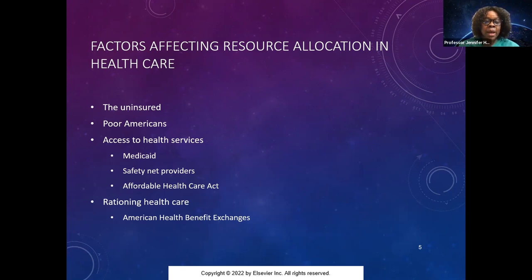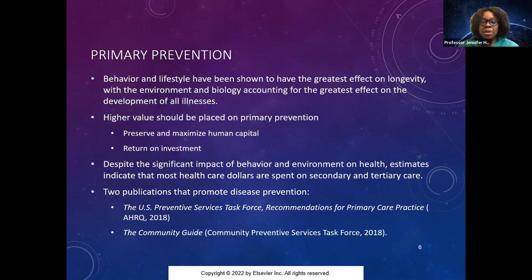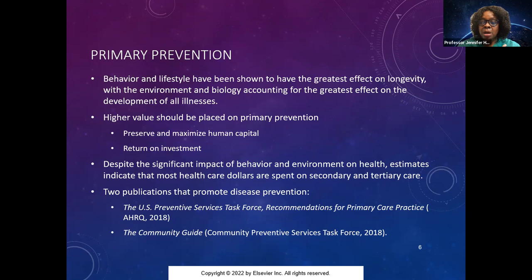When looking at primary prevention, behaviors and lifestyles have shown to greatly impact longevity, with the environment and biological factors accounting for the greatest effects on illness development. Higher values should be placed on primary prevention — that's our education focus, the first tier before secondary or tertiary. We want to prevent at the primary level as much as possible. One of the four major factors affecting health are the social, economic, and human biology, which are said to have the least effects — so focus on behavioral and lifestyle factors.